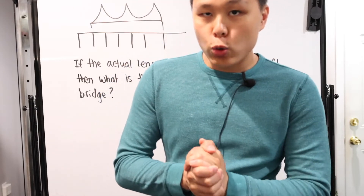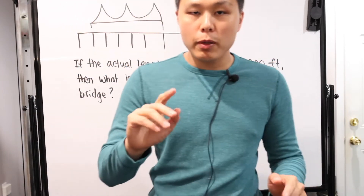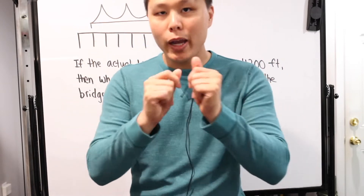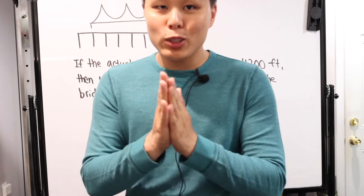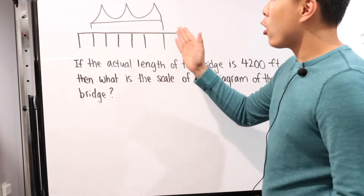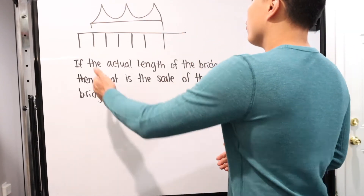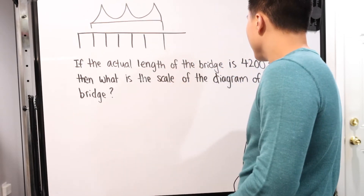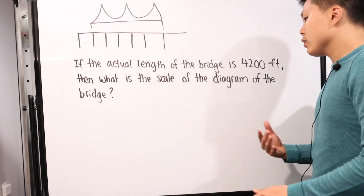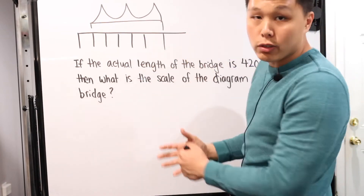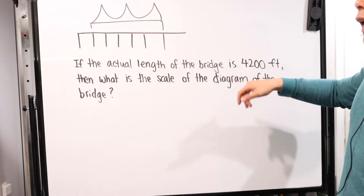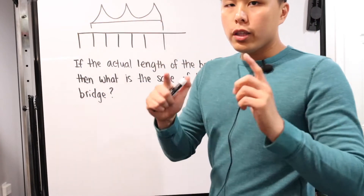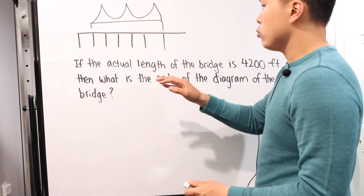This is a reshoot of problem number three of the CBEST practice exam — technology failed during the original recording. We have a drawing of a bridge and a ruler. The problem is a ratio and scaling problem: if the actual length of the bridge is 4,200 feet, what is the scale of the diagram? We know the actual length is 4,200. The potential mistake here is misreading the ruler — it doesn't start at zero, it starts at one.